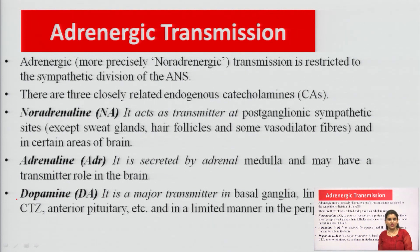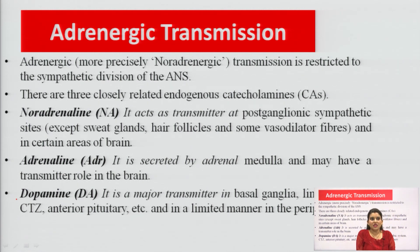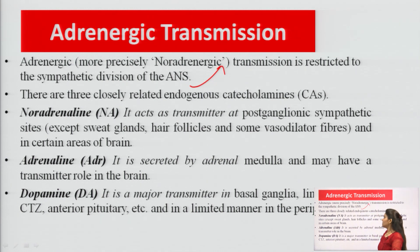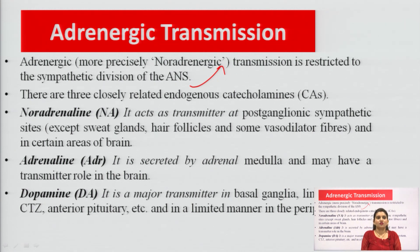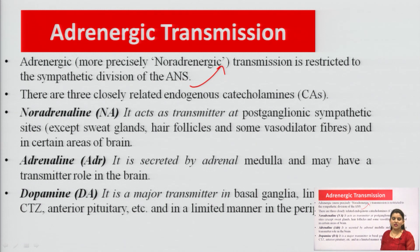Adrenergic — more precisely known as noradrenergic — transmission is restricted to the sympathetic division of the ANS, because the major neurotransmitter of the sympathetic division is noradrenaline or adrenaline. The three major neurotransmitters of adrenergic transmission are: first, noradrenaline; second, adrenaline; and third, dopamine.